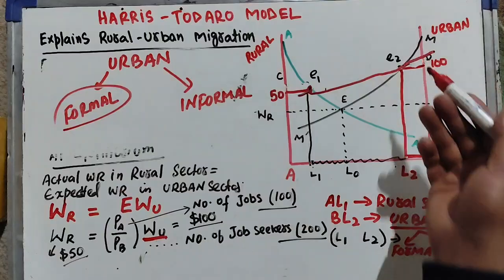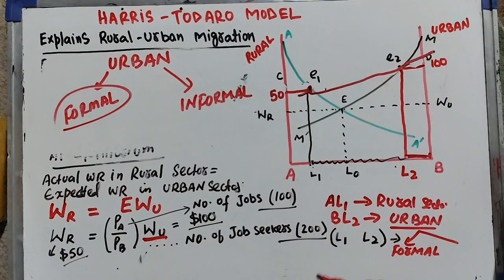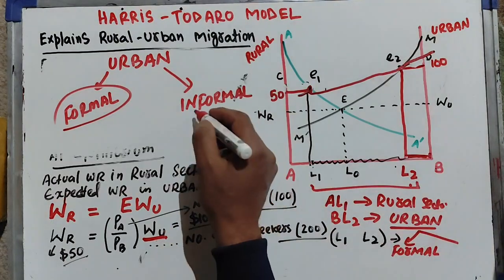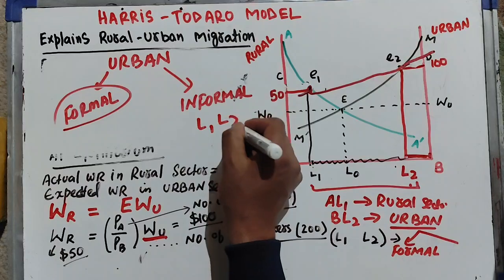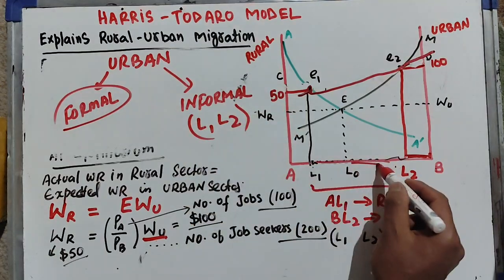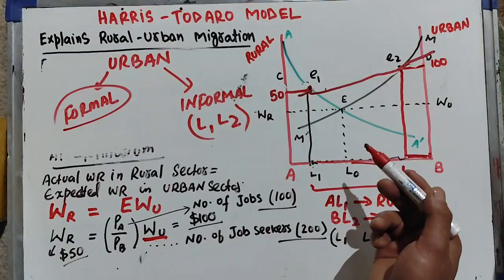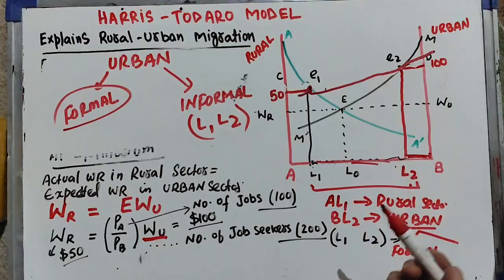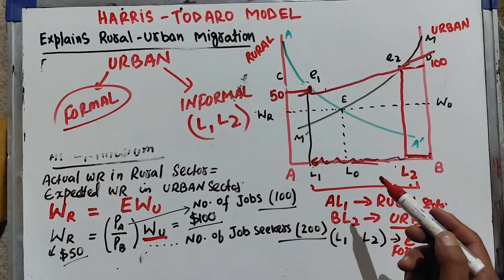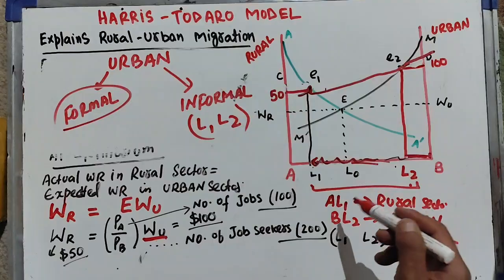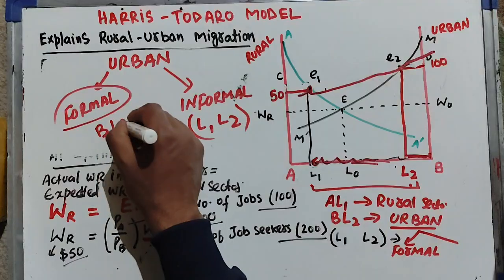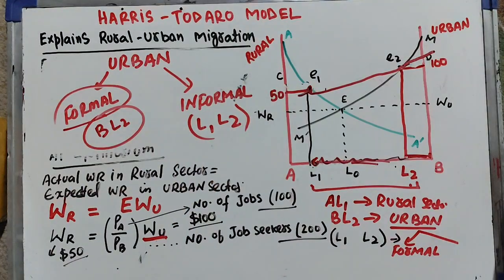The BL2 portion represents workers in the formal sector who receive high wages and salaries. The L1 to L2 workers are in the informal sector — they cannot return to the rural sector but don't want to remain unemployed, so they work in the informal sector for lower wages with high exploitation. The main essence of the Harris-Todaro model is that people compare the actual wage rate in the rural sector with the expected wage rate in the urban sector.